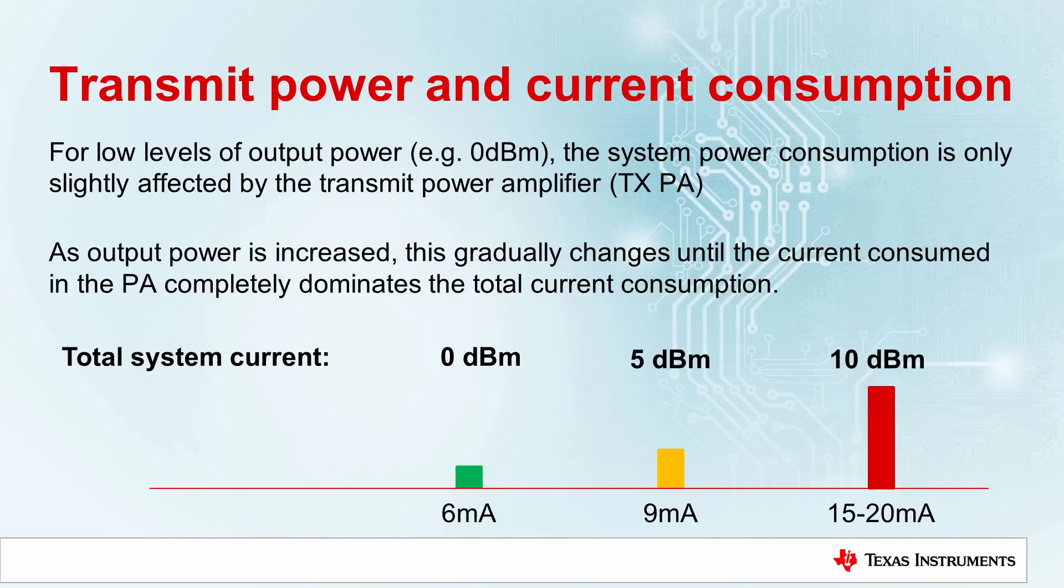As mentioned earlier, another way to increase the link budget is to increase the TX output power. Many BLE applications transmit at 0 dBm to optimize the power consumption. At 0 dBm, CC2640 consumes 6 milliamps.